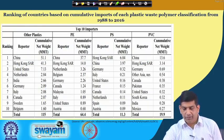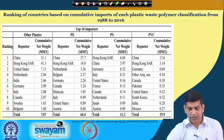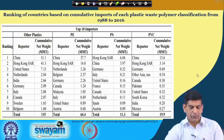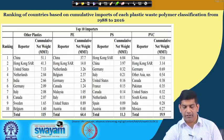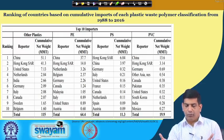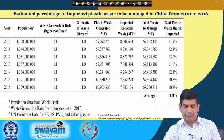Looking at the ranking of countries based on cumulative import of each plastic waste polymer classification, China leads the pack for most categories, followed by Hong Kong. The US also imports certain types of plastic, along with India, Italy, Canada, Sweden, and Belgium. This tells us that although there are concerns about exporting plastic waste, many countries also import plastic waste fiber for use in different industries.